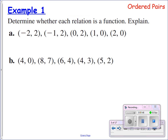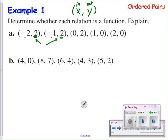First, we've got a relation given using ordered pairs, and we need to describe whether or not that relation is a function. Let's look at all of our inputs, all of our x values. Each ordered pair is given (x, y), where x is what's going into that function and y is what's coming out. We're on the lookout for: is there the same input going to two different outputs? I go from negative two to two, from negative one to two — those lead to the same output, but I don't have the same input going to different outputs, so I'm okay.